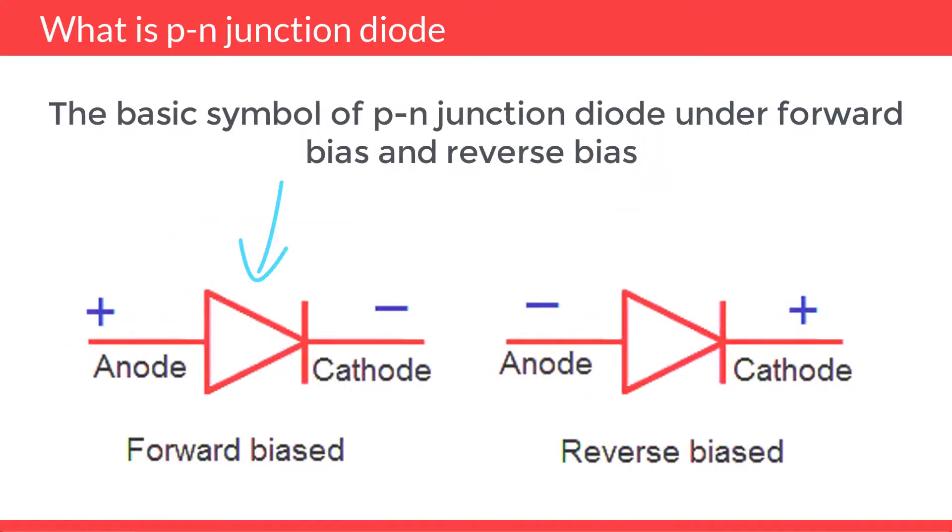The arrowhead of a diode indicates the conventional direction of electric current when the diode is forward biased, from positive terminal to negative terminal. Holes moving from positive terminal (anode) to negative terminal (cathode) represent the conventional direction of current.